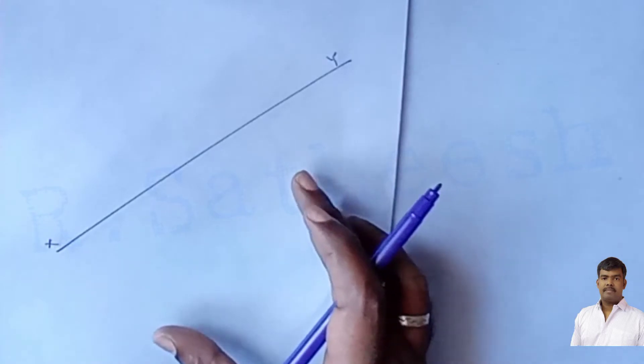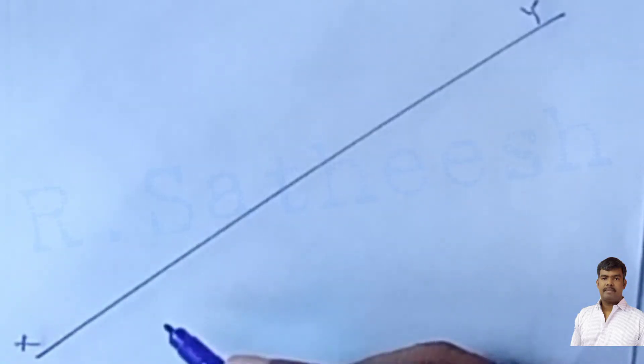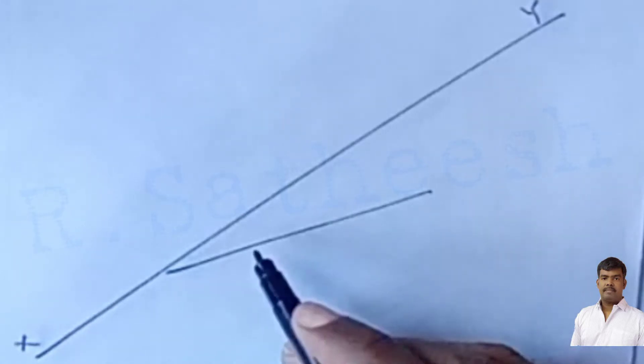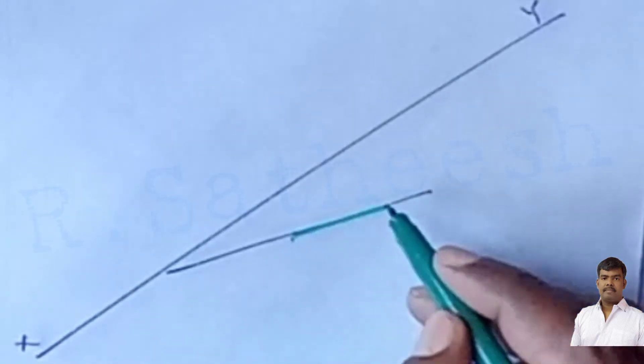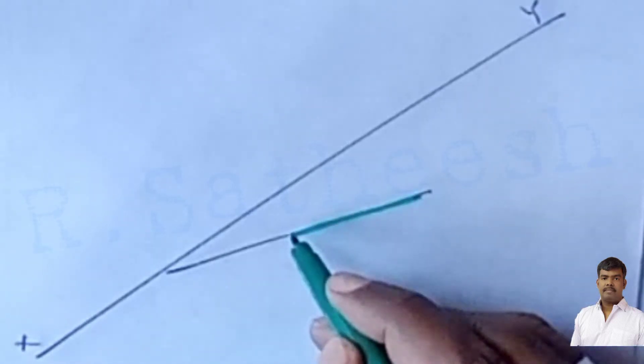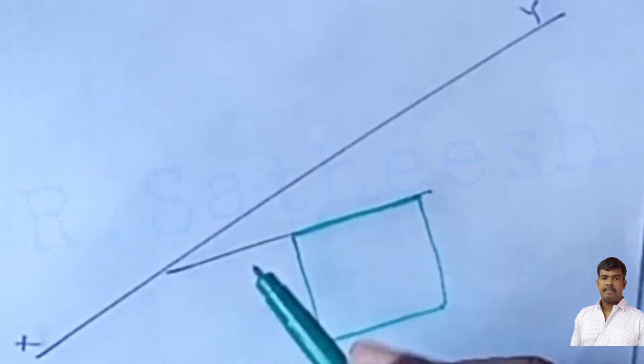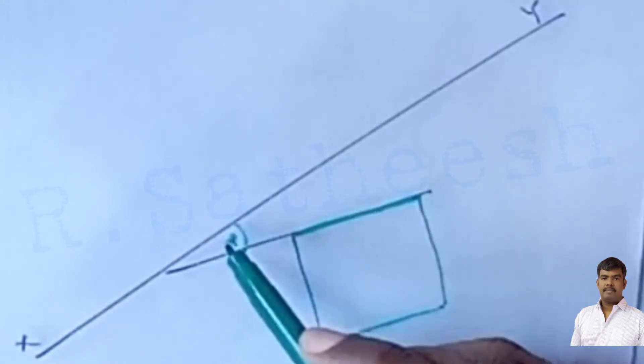First draw the XY reference line. Since the cube initially rests on the HP, the top view appears as a square of side 30 mm. The vertical faces are inclined at 35° to the VP. Before drawing the top view, draw one inclined line at 35° to the VP. On that line, place the cube of size 30 mm — a 30×30 square. This angle is 35° inclined to the VP.